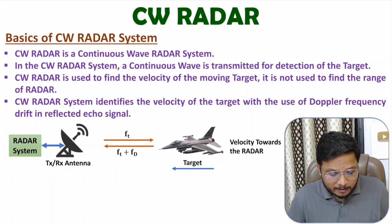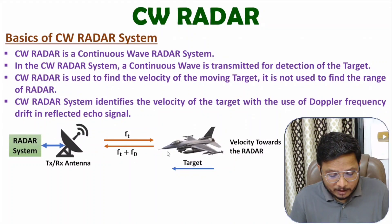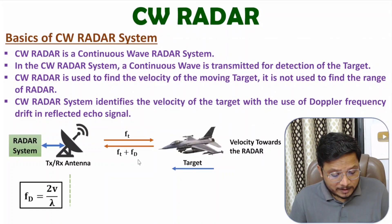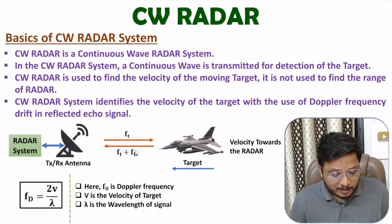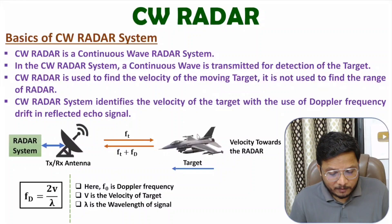Direction can be identified based on FT plus or minus FD. If the frequency drift is positive, the target is moving towards the radar system. If the frequency drift is negative, the target is moving away from the radar system. If you want to calculate velocity based on this frequency drift, the drift in frequency is 2V divided by lambda, where V is the velocity of the target.